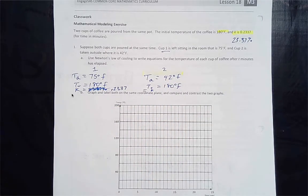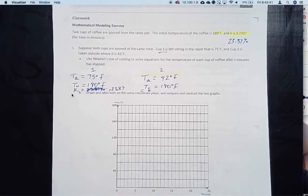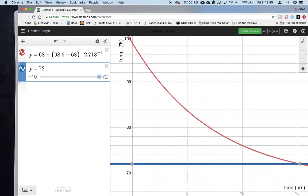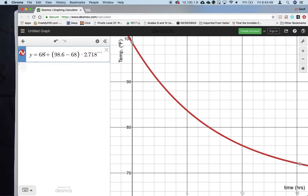So complete the equation and I'm just gonna jump into Desmos. If I go here and delete this, T_a is 75 plus 180 minus 75, and what was that? 0.2337.